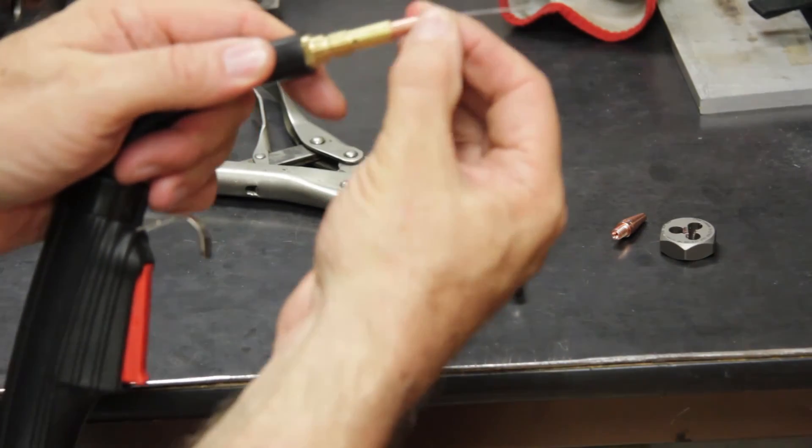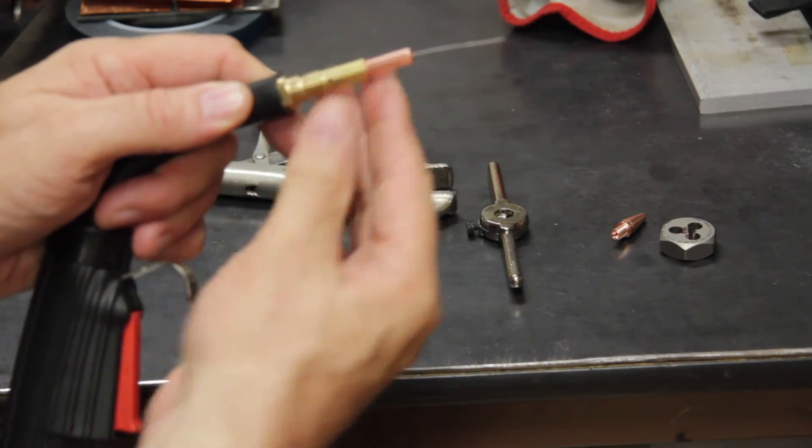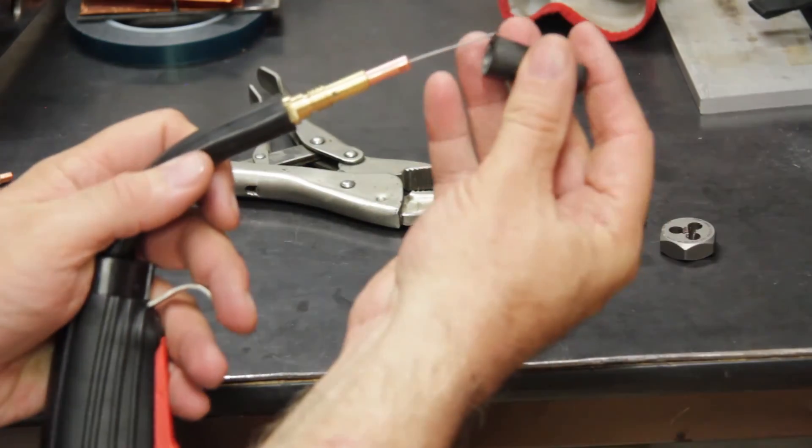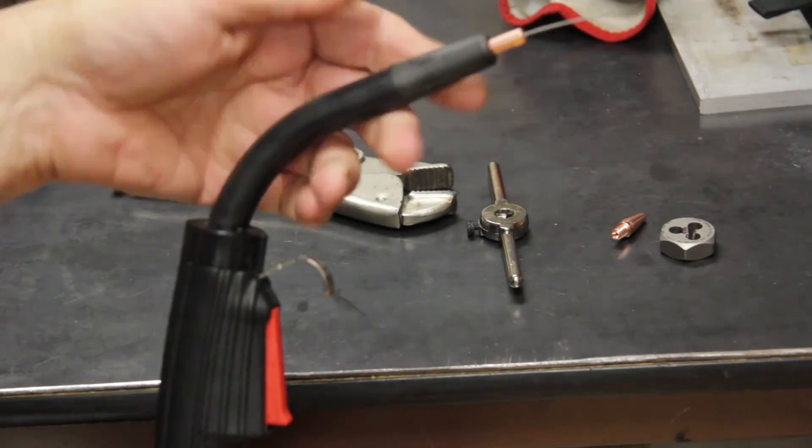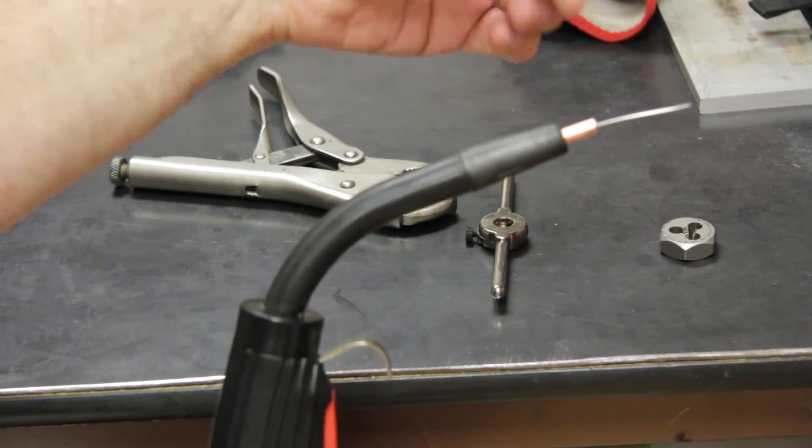And as you can see, this is very snug. It screws all the way in, flush, with the gas diffuser. And, put the cap back on here. So now, I can take advantage of either the old style tip, or the new style tip.